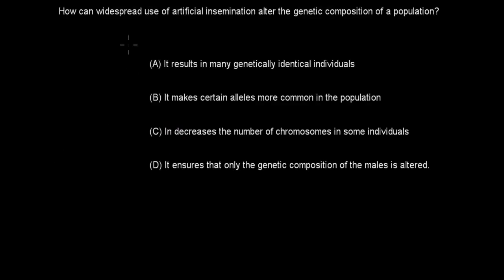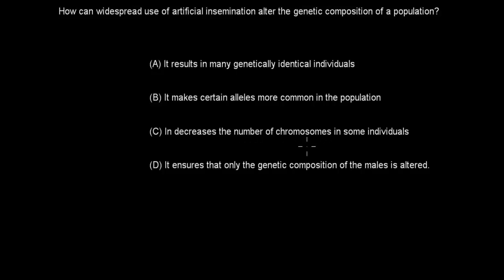Question 3: How can widespread use of artificial insemination alter the genetic composition of a population? A. It results in many genetically identical individuals, B. It makes certain alleles more common in the population, C. It decreases the number of chromosomes in some individuals, or D. It ensures that only the genetic composition of the males is altered. Pause the video and attempt the question.